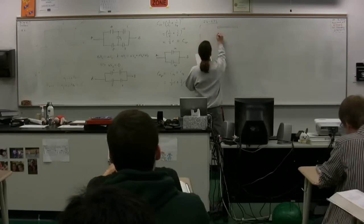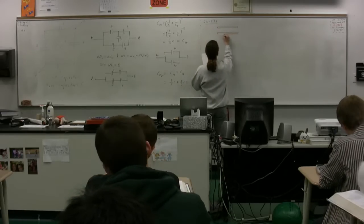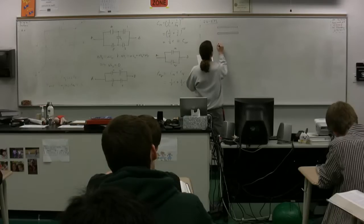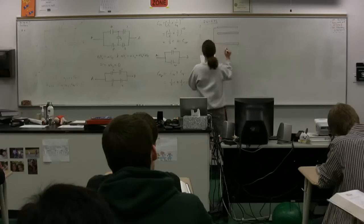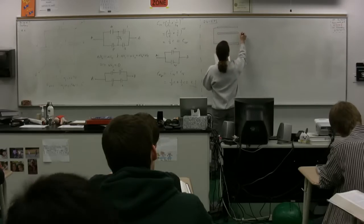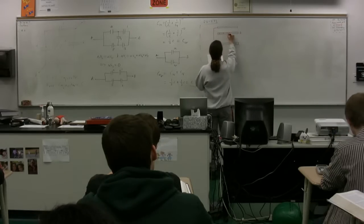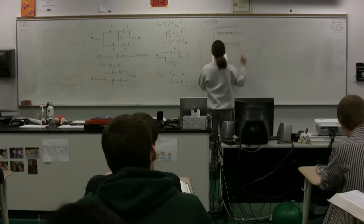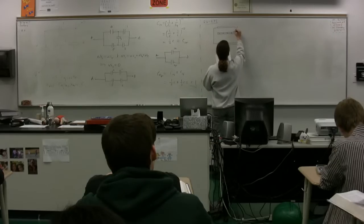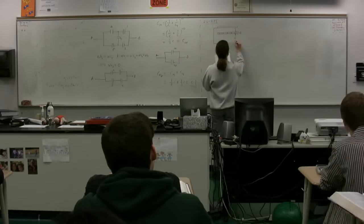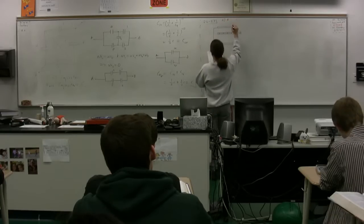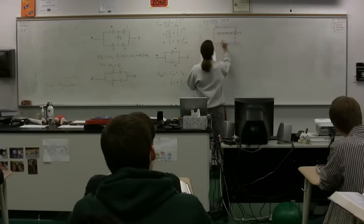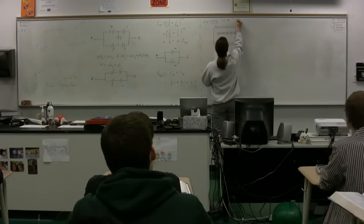Two large parallel metal plates are oriented horizontally and separated by a distance 3D. Conducting wires join them, and initially each plate carries no charge. A third identical plate carrying charge Q is inserted between the two plates, parallel to them, located a distance D from the upper plate, as in the figure. Part A: What induced charge appears on each of the two original plates? Part B: What potential difference appears between the middle plate and each of the other plates? Each plate has an area A.